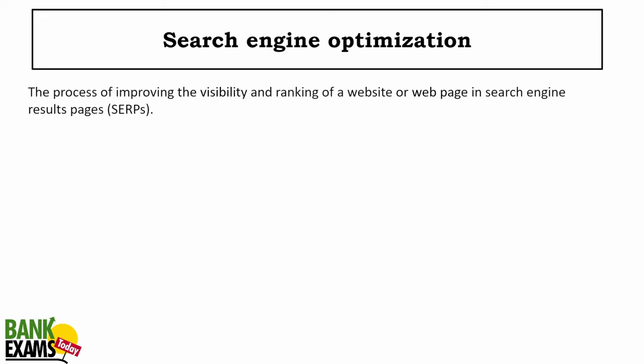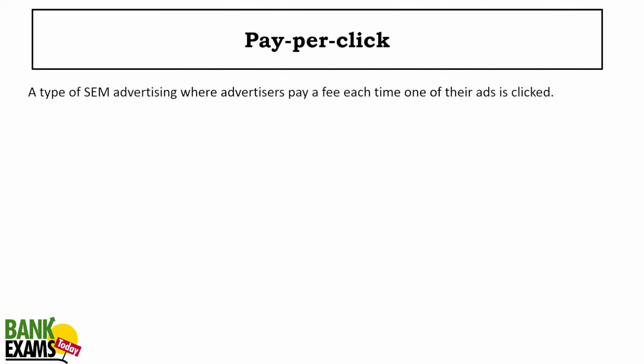Search engine optimization (SEO) improves the visibility of your website or landing page on Google or Bing so it can get free organic traffic. Pay per click (PPC) is a type of search engine marketing where you pay per click to rank higher on Google and get traffic from target customers who then convert and take the actions you want.